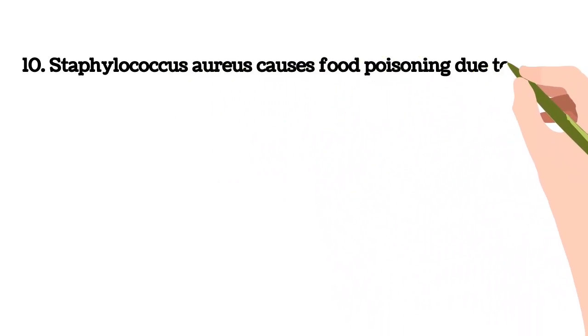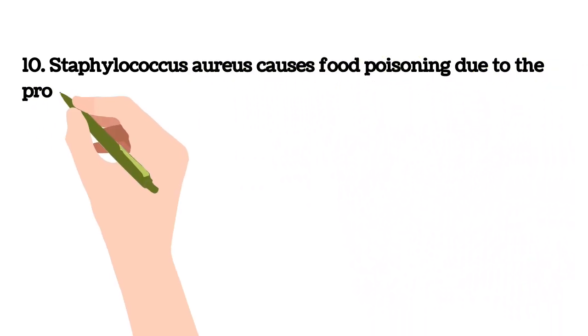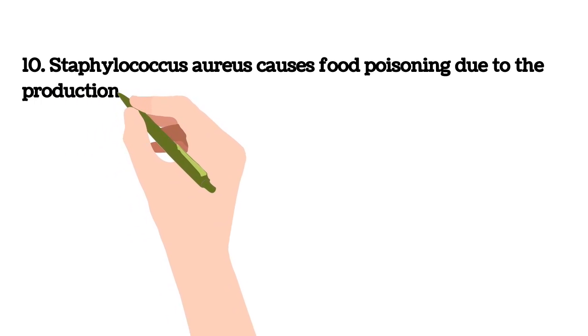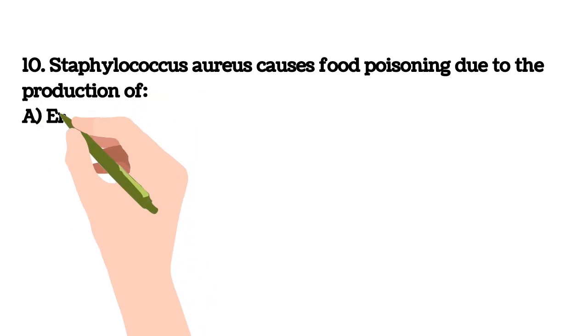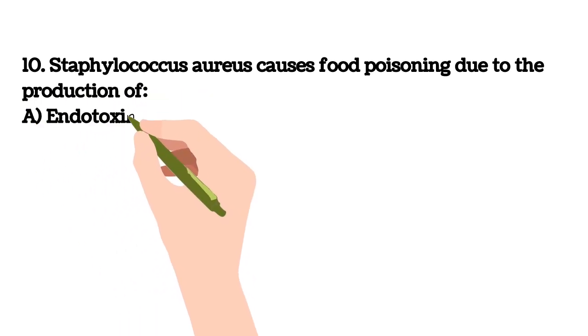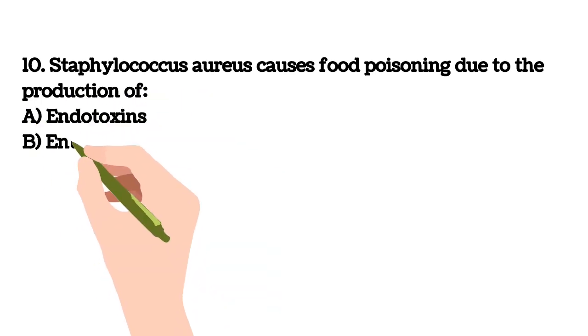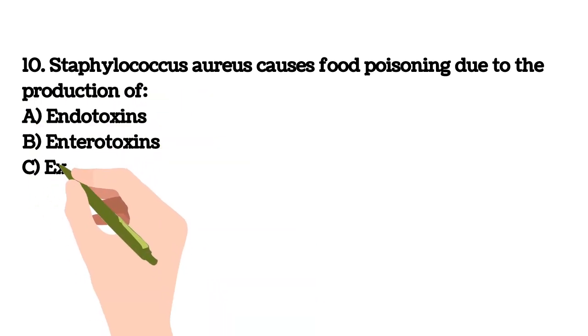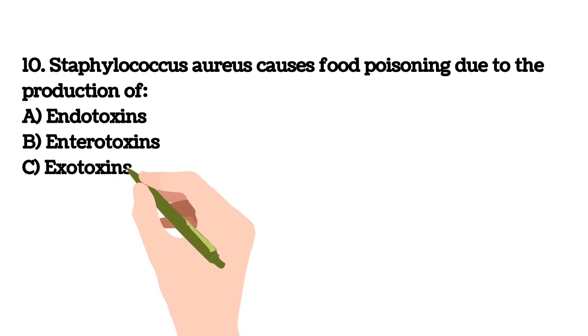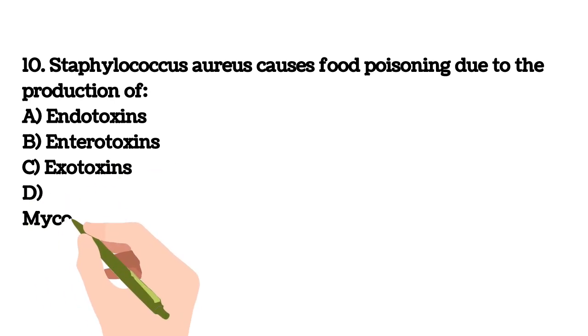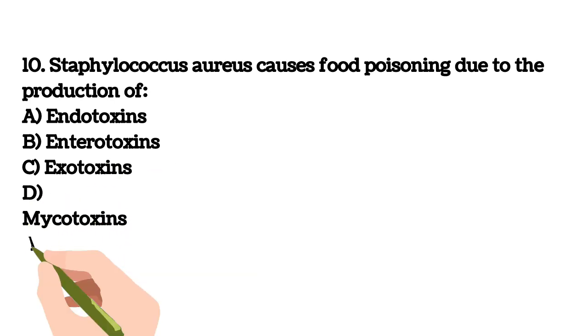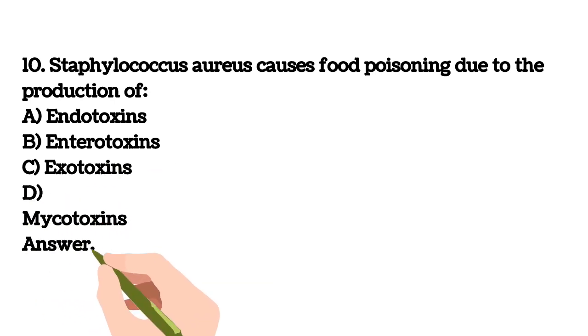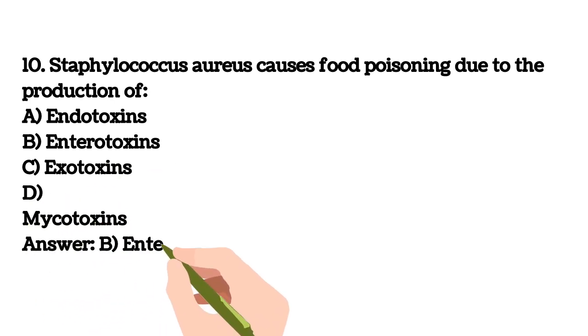Tenth question: Staphylococcus aureus food poisoning is due to the production of — A) endotoxins, B) endotoxins, C) exotoxins, D) mycotoxins. The answer given is B) endotoxins.